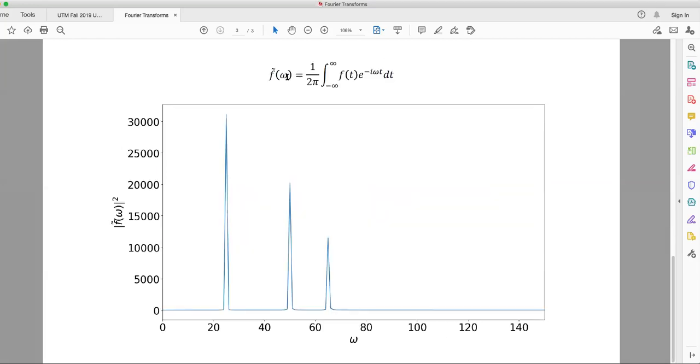If you were to take the Fourier transform of this function and find the power spectrum, so the square modulus of the Fourier transform, you would get three peaks at each one of the constituent frequencies of this function.